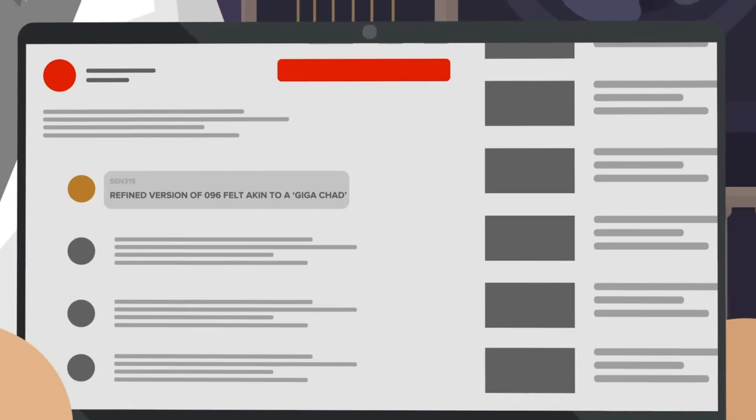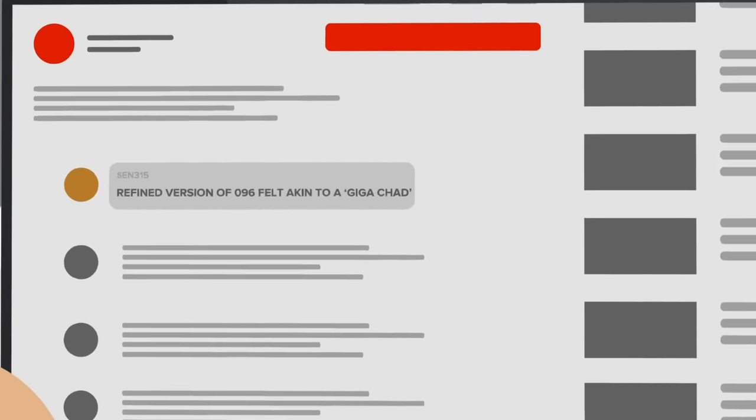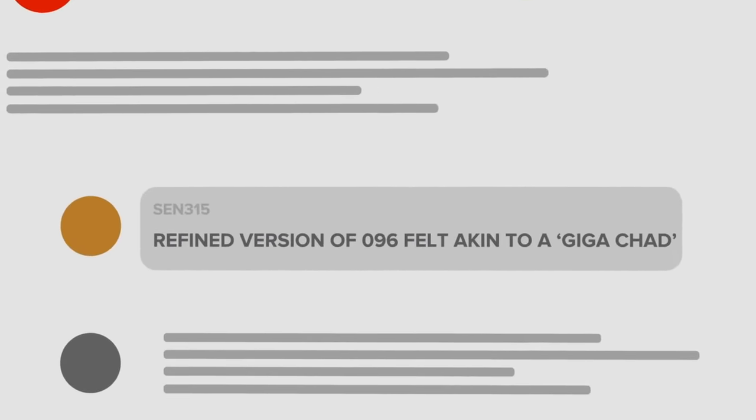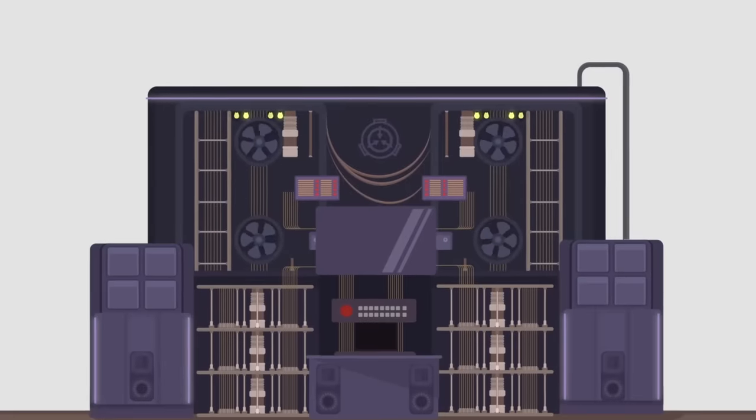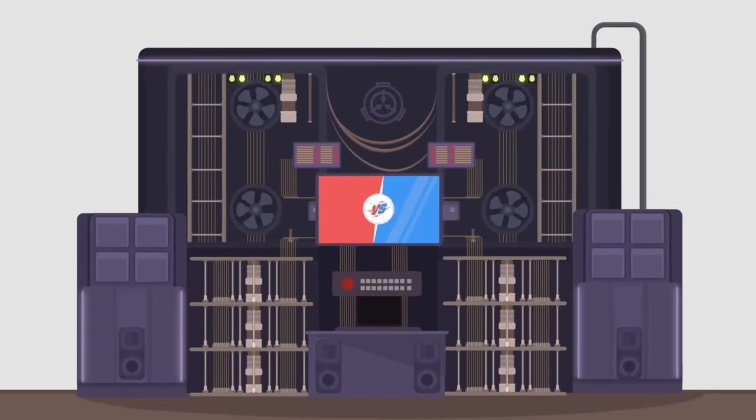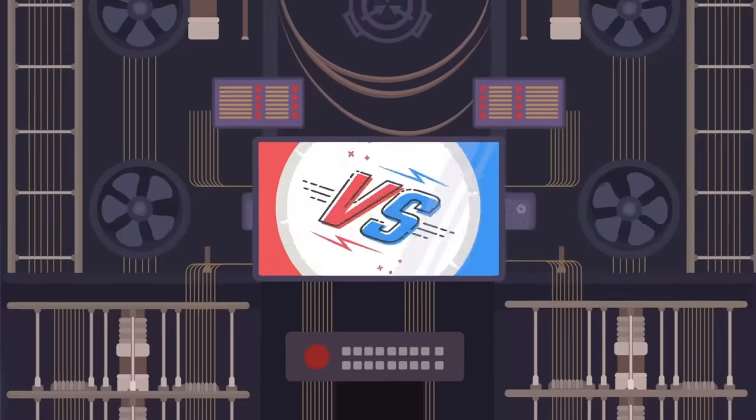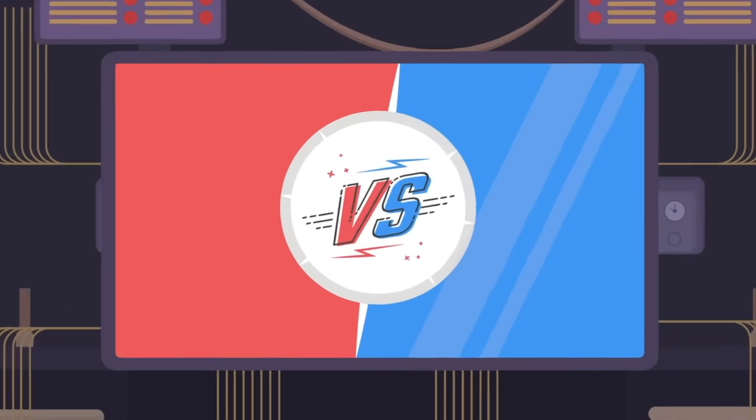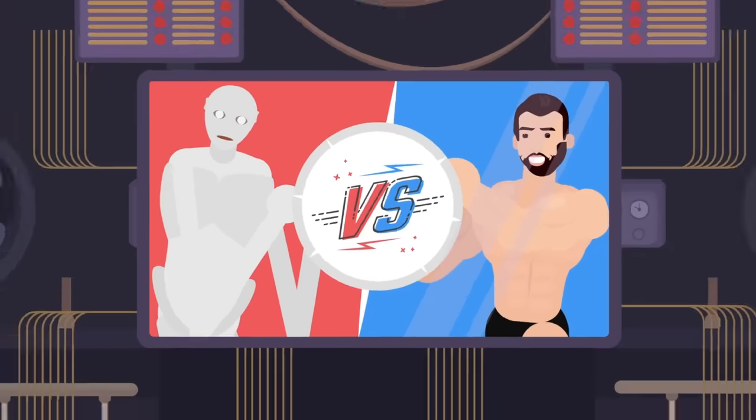A lot of our comments pointed out that this refined version of 096 felt akin to a Giga-Chad, and that got us thinking. What if SCP-096 was to encounter the real Giga-Chad? Well, the Anomatron 6000 has a few different answers for us.